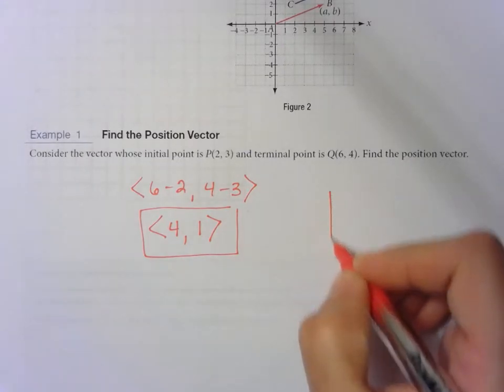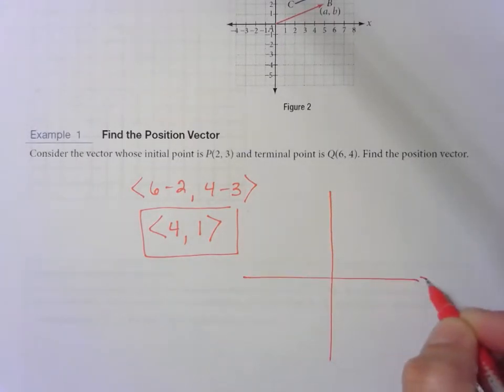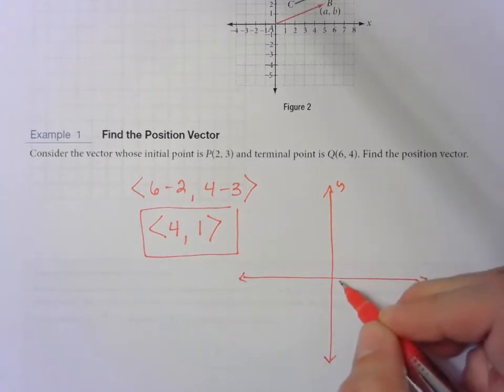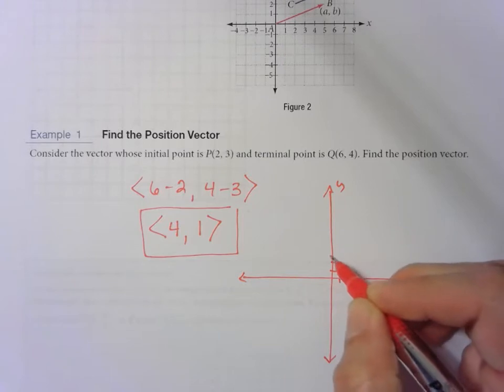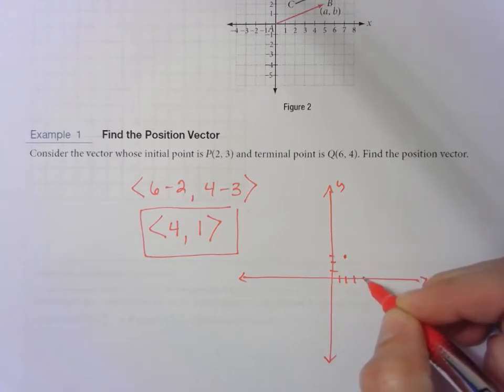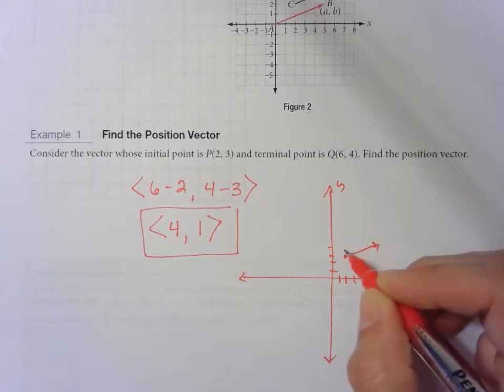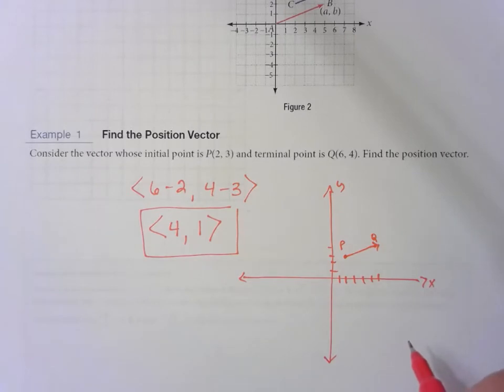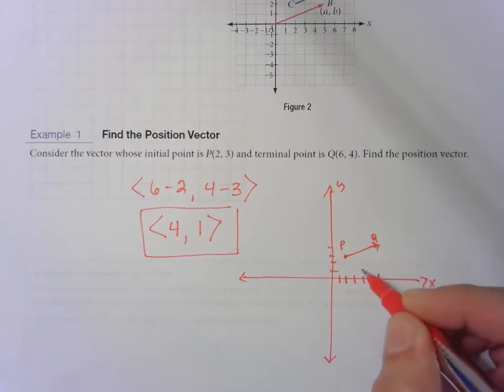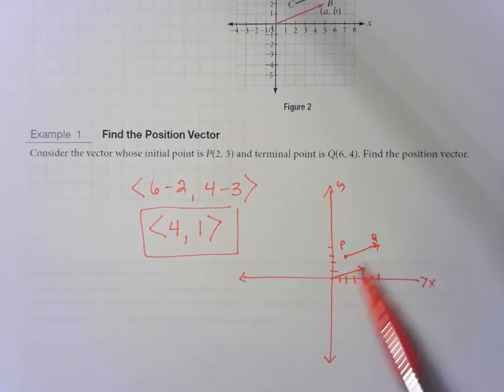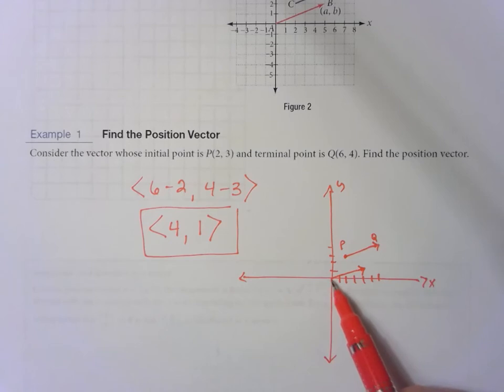You can actually see this, the original one started at (2,3) and stopped at (6,4). Something like that. So this was our P and this was our Q. And our position vector is at (4,1). I know it's hard to tell when this isn't on a grid, but this vector is the same direction and the same length as the original. The difference is it starts at the origin.